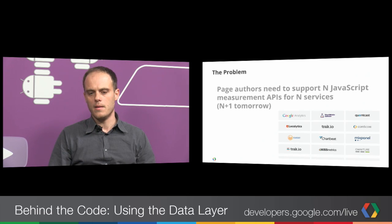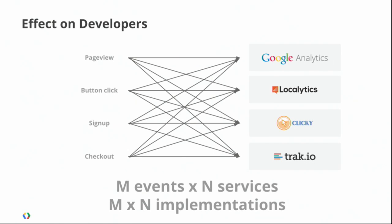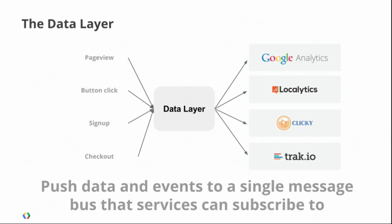All of that requires a little bit of JavaScript that pings servers with data. We've got dozens of different services for things like web analytics, conversion tracking, and remarketing, and they all have their own implementations of how you send them data. You end up with M events and N services to track them with — just a matrix of different ad hoc implementations.